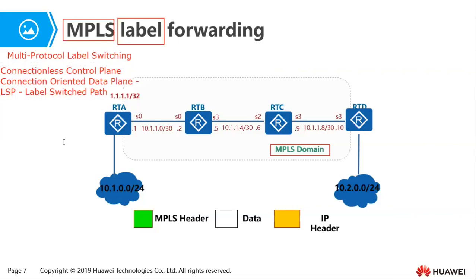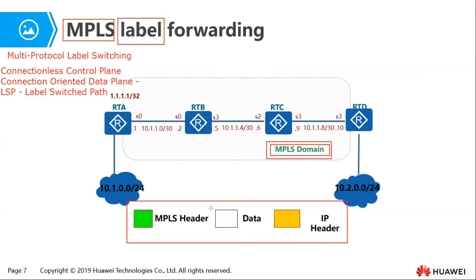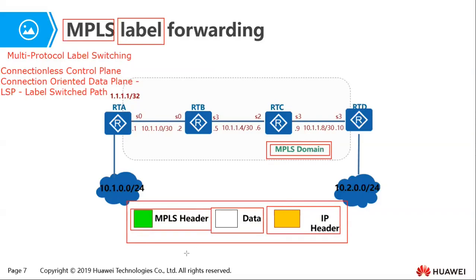In summary: when routers forward data based on the MPLS header, we call that area an MPLS domain. In an MPLS domain, the packet has the data, the IP header — which is not used for forwarding — and most importantly the MPLS header, which specifies the labels that determine how the packet is forwarded within the MPLS domain. This use of labels to forward packets greatly improves forwarding efficiency.